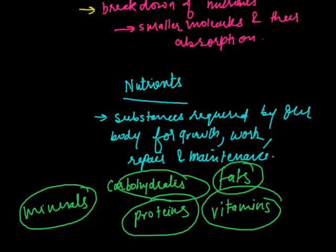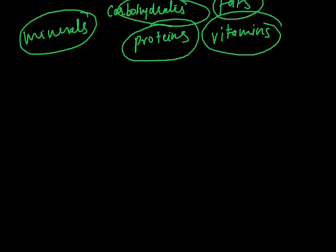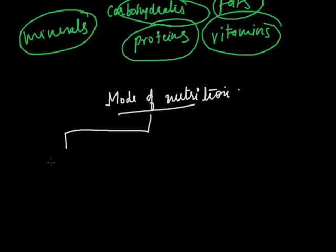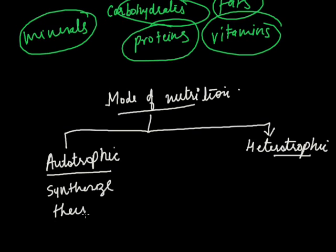Our daily energy need may vary according to our occupation, sex, and under some specific conditions. Now I will discuss the mode of nutrition. There are several modes of nutrition. Organisms can be autotrophs, having an autotrophic mode of nutrition, or they can have a heterotrophic mode of nutrition. Autotrophic means they can synthesize their own food like plants, while heterotrophs are not able to synthesize their own food.